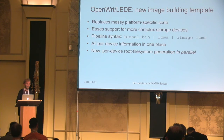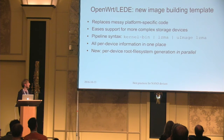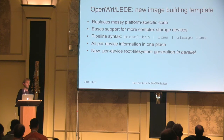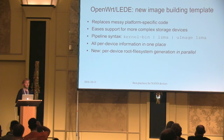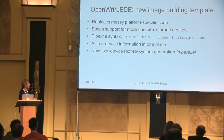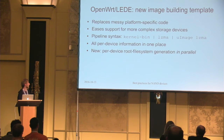A short introduction to OpenWRT/LEDE: we had new image-building templates introduced recently, within the last year. They replace a lot of messy platform-specific code which we previously used to generate factory images and sysupgrade images. They also ease support for more complex storage devices like NAND flash, eMMC, or even x86 with a regular hard drive and GRUB. Previously this used to be painful — tons of platform-specific makefile magic. Now we have a beautiful pipeline-based syntax: just say you need the kernel LZMA compressed inside a U-image, and you can replace exhaustive platform-specific code with a single line.